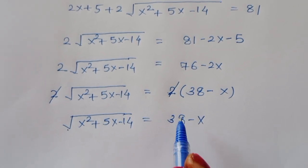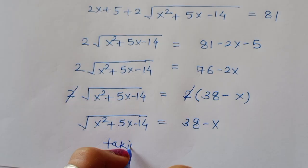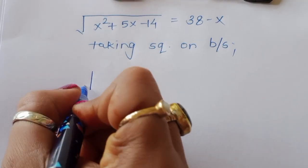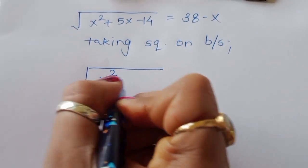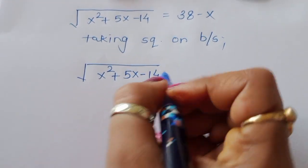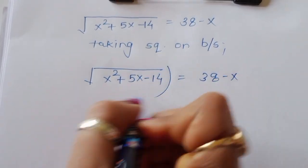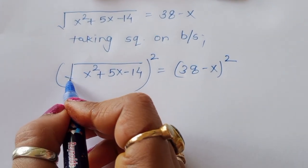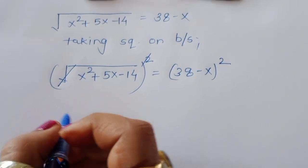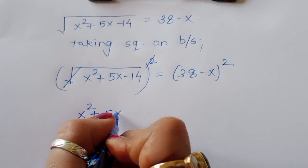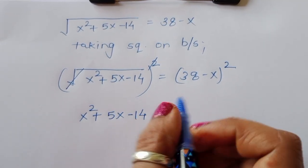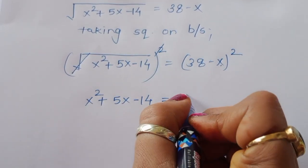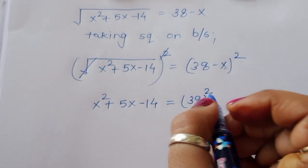Now we have to cancel this square root, so we take square on both sides again. Taking square on both sides: [√(x² + 5x - 14)]² = (38 - x)². The square cancels the square root on the left. On the right, this is the (a - b)² formula: a² - 2ab + b². So a² = 38², minus 2ab = 2·38·x.